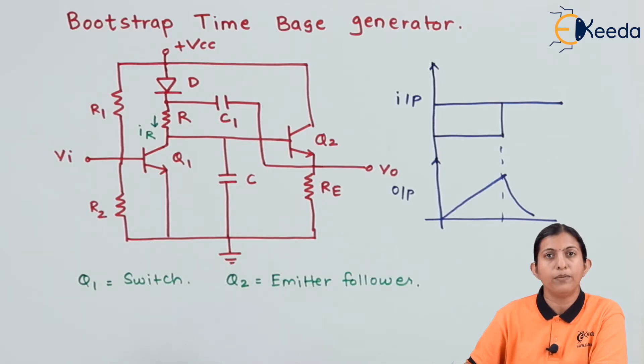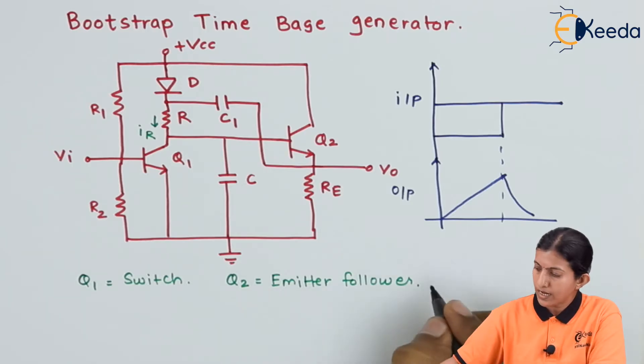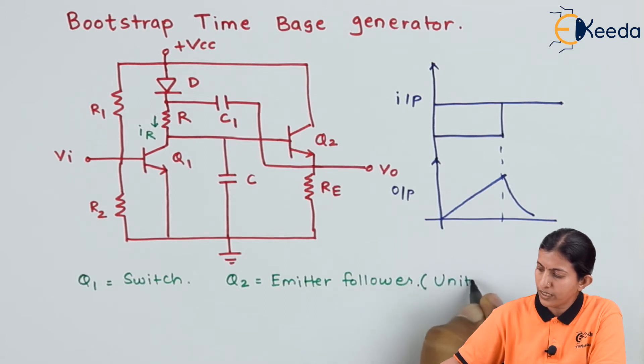Hence, it is termed as an emitter follower circuit. This emitter follower is always a unity gain amplifier.